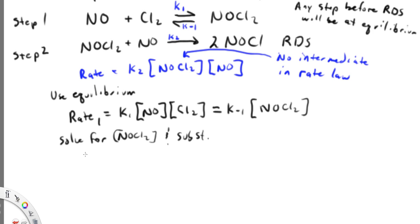So we'll substitute that in the rate law. Solving for NOCl2, that's going to equal K1 over K minus 1, again those are not necessarily equal so this doesn't equal 1, times NO times Cl2.